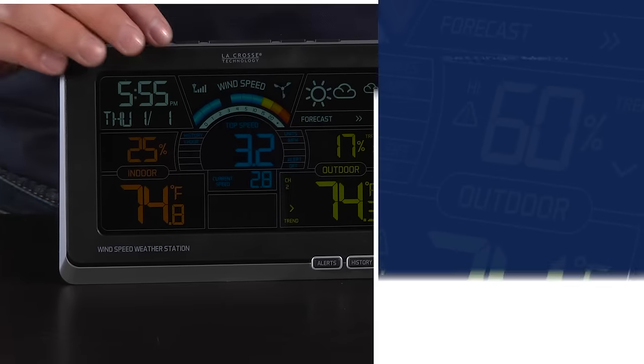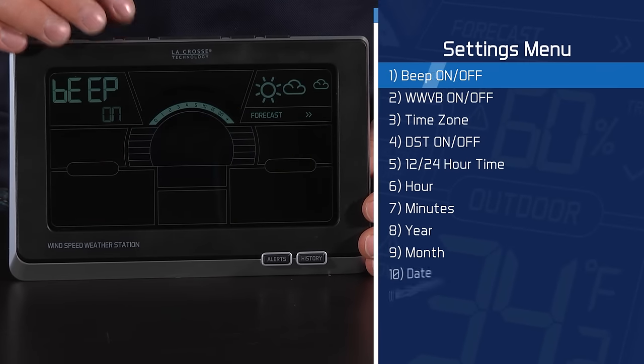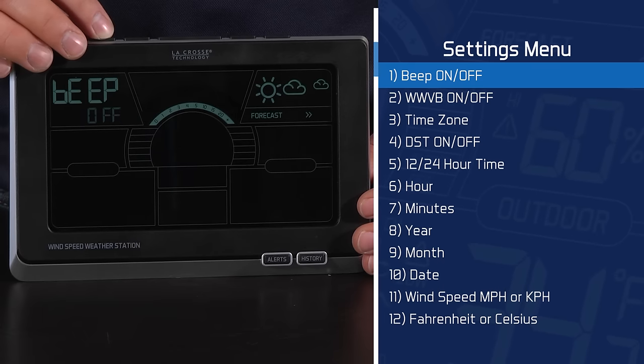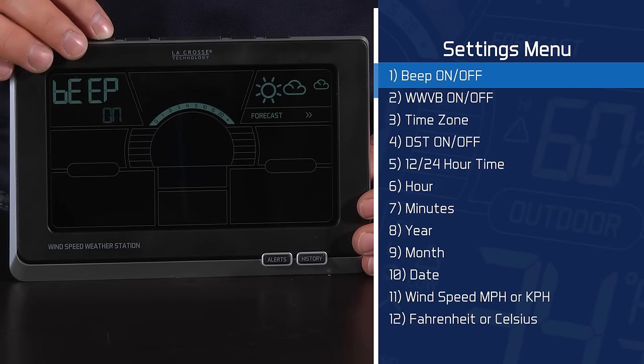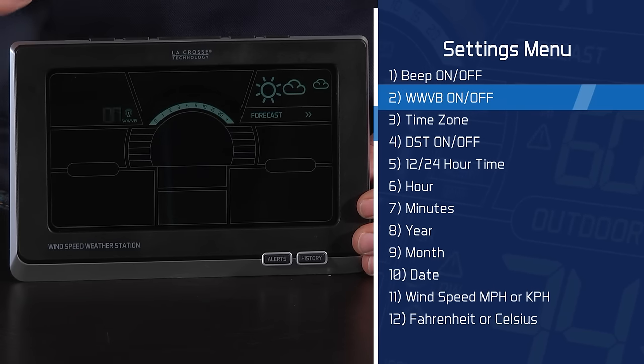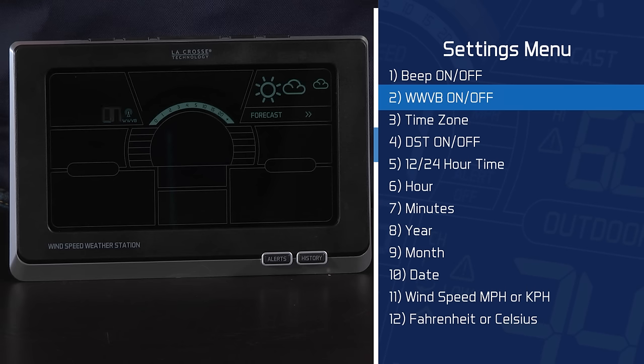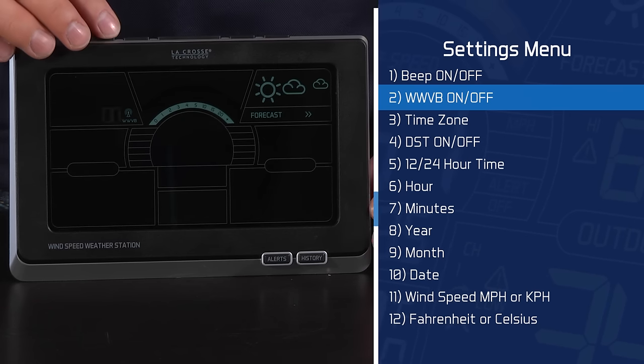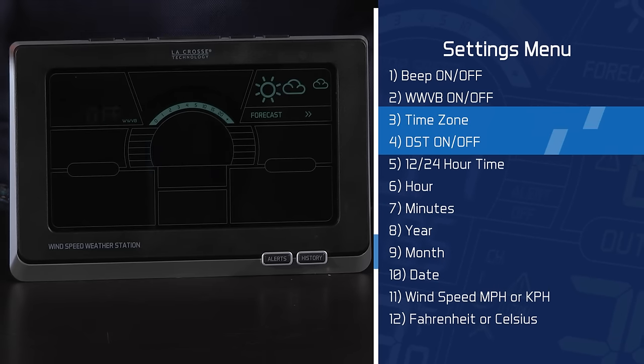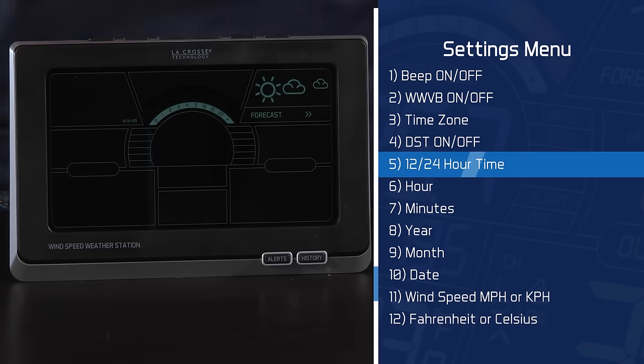Here is a rundown of what the settings menu covers. The first item is the beep function on-off setting. When turned on, you will hear a beep for every button push. Use the up or down arrow button to switch it on and off. After a press and release of the time set button, I move to the second item, which allows us to choose if we want to use the WWVB atomic time signal. It's important to note that if this is set to off, the third and fourth items in the setting menu will be skipped, moving us directly to item 5.